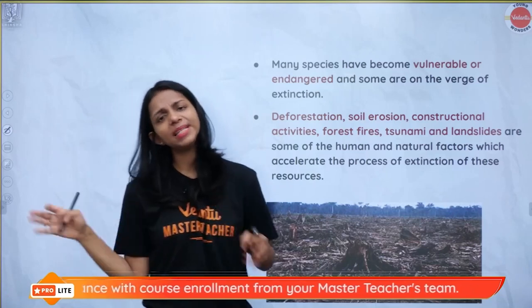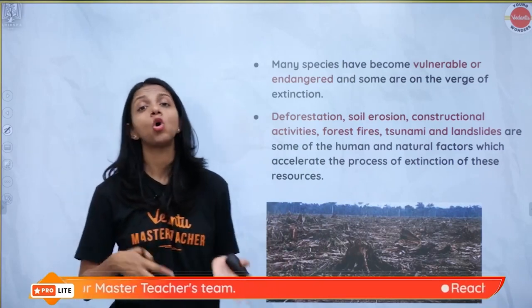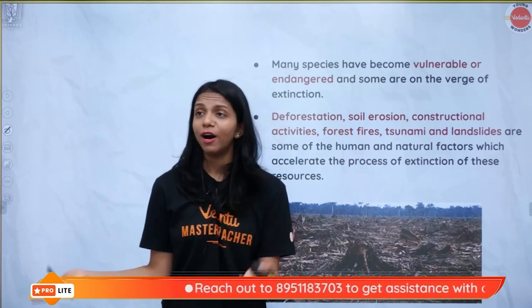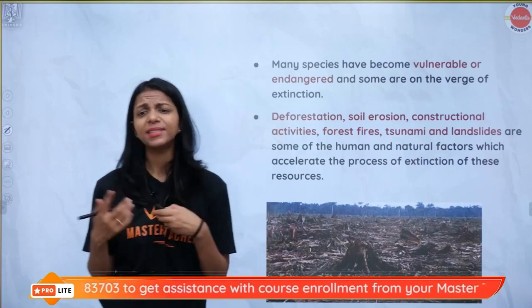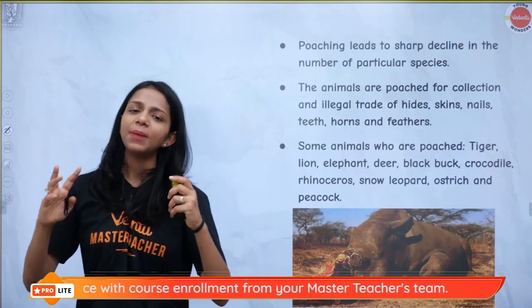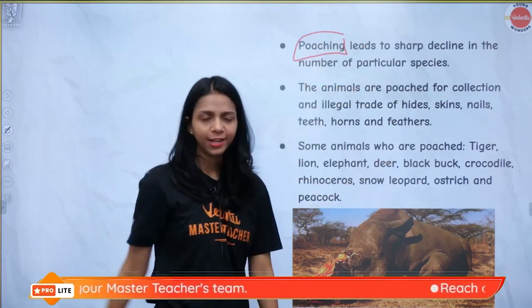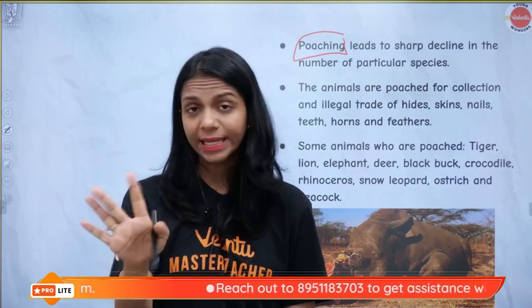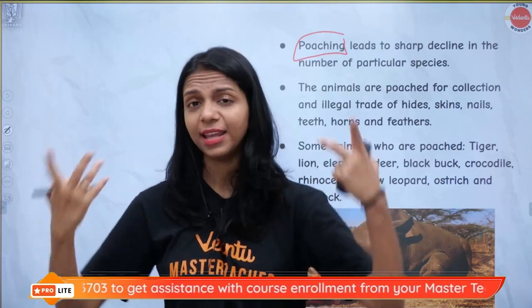The threats to natural vegetation: human beings are cutting down trees, destroying animal habitats. Animals are getting endangered and vulnerable — close to extinction. Cheetahs are extinct in India; dodo birds are completely extinct. Construction activities, forest fires, landslides, and tsunamis are all great problems for our natural vegetation and wildlife. Poaching — illegal hunting — is also a major threat. Human beings illegally hunt elephants, deer, black bucks, snow leopards, and ostriches for their hides, skin, and meat, and these animals are now close to extinction.